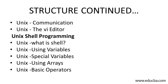Continuing further, we will be having Unix communication and Unix vi editor. What is a vi editor? Just a basic notion — as we have Notepad in Windows, we have a similar thing as an editor in Unix called the vi editor. Then we will be continuing on Unix shell programming. We will have explanation for what is shell, what are variables in Unix — as we have in different programming constructs, we have variables here also, we have special variables, we have arrays here and how to use arrays.